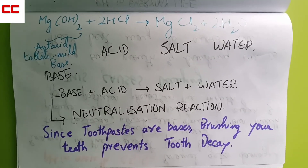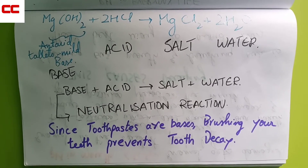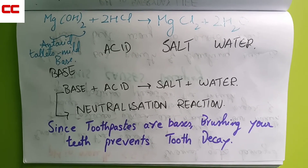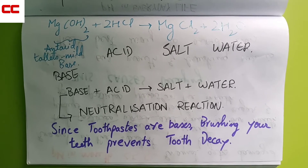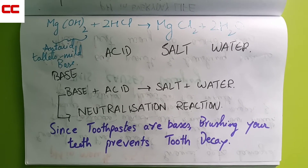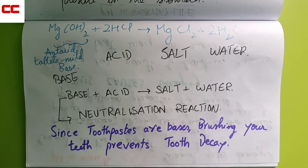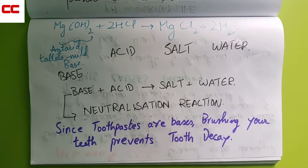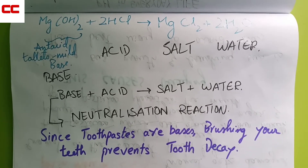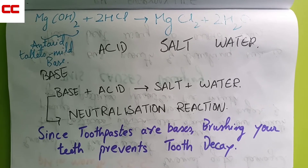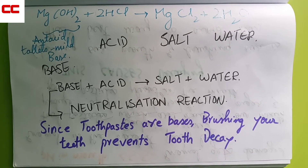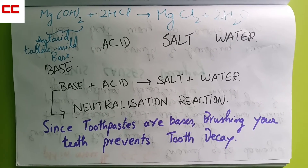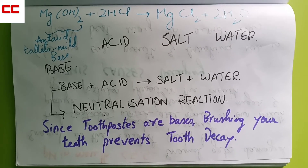Mg(OH)₂ is magnesium hydroxide, which is present in antacid tablets, and antacid tablets act as mild bases. When this goes into the stomach where there is HCl, the equation is: Mg(OH)₂ + 2HCl → MgCl₂ + H₂O. HCl is the acid, and base plus acid gives salt and water, as we read in previous classes. MgCl₂ (magnesium chloride) is the salt, just like sodium chloride, and H₂O is water.